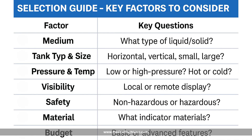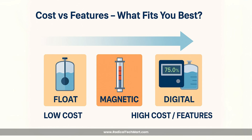Sixth is mounting style — you need to consider side mounted, top mounted, or inline. Magnetic and side glass types are side mounted, while float types can be top mounted. Seventh, consider budget and maintenance. Basic float types are very cost-effective, magnetic indicators are durable but costlier, and digital indicators offer advanced features.